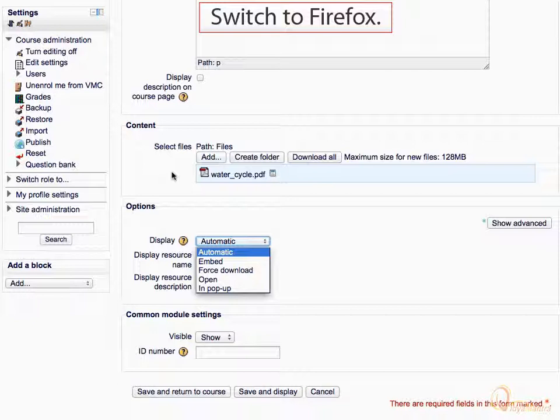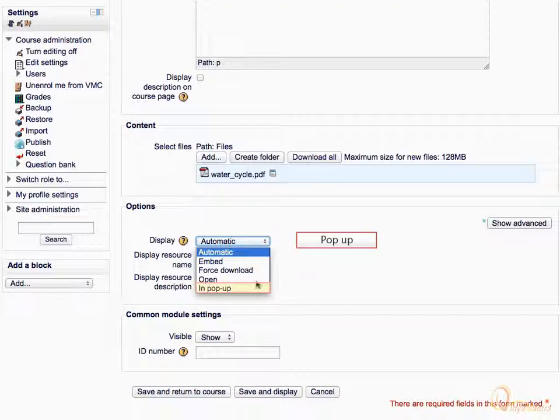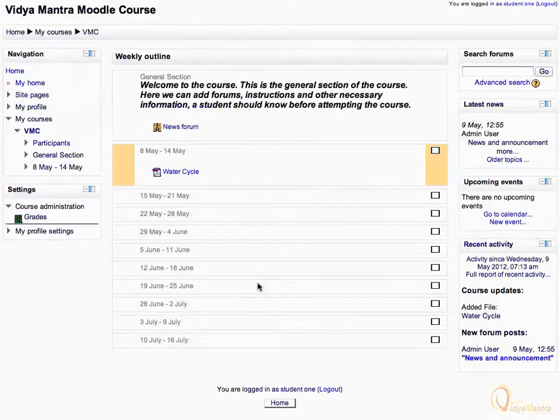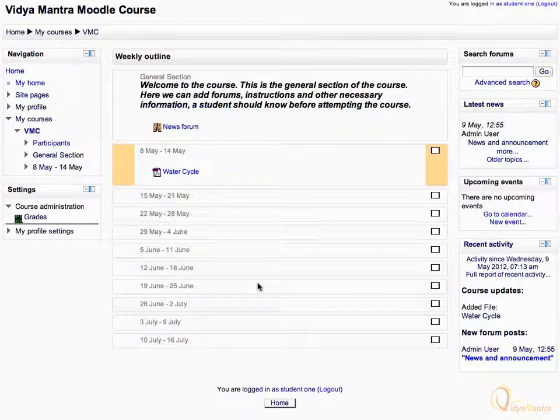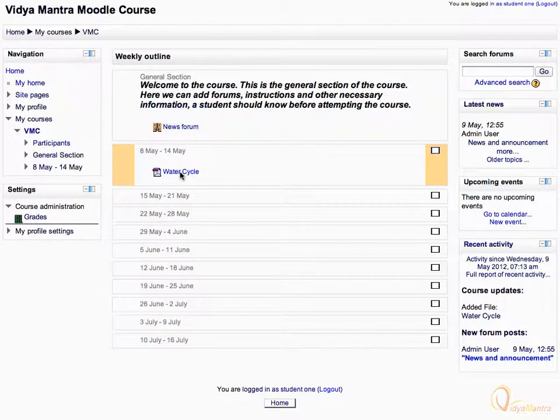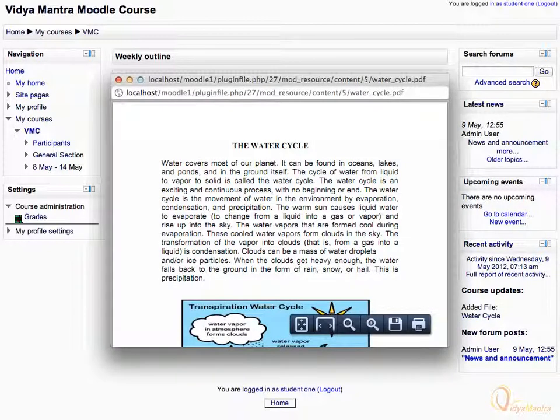Again switch back to Firefox and change the display option to in pop-up and save the file. Now, again switch to Google Chrome and click on water cycle file. This time the file would be opened in a pop-up window, with controls on the bottom right.